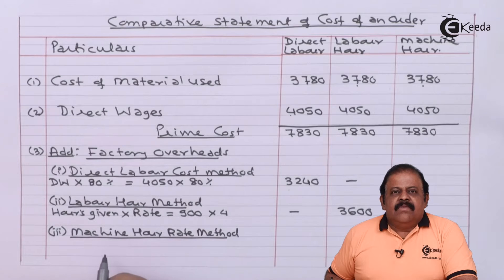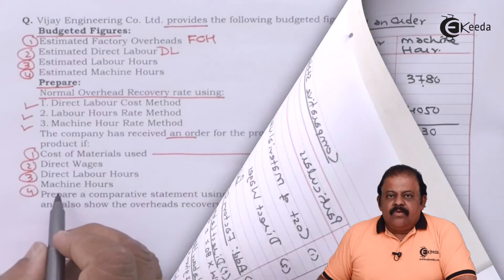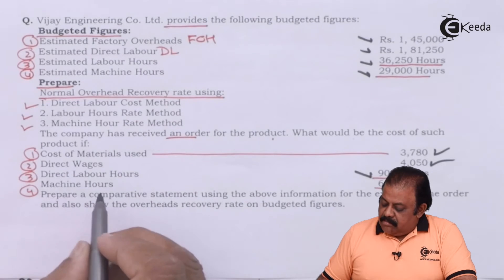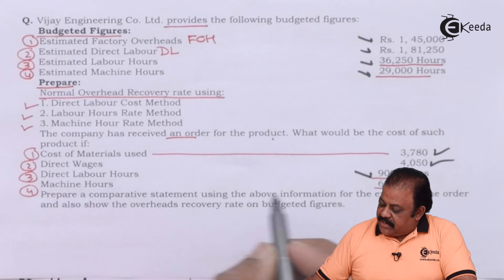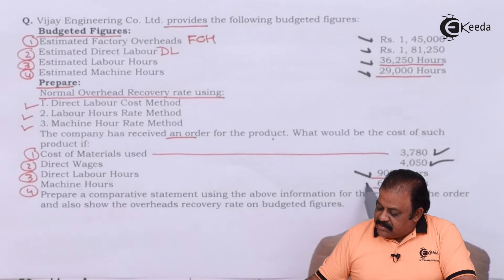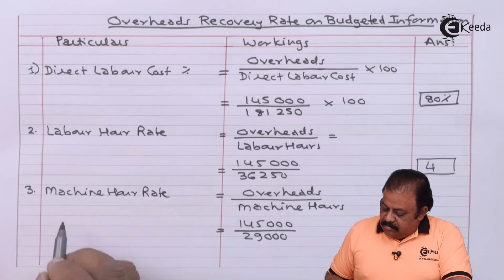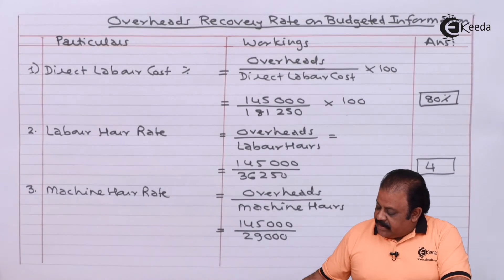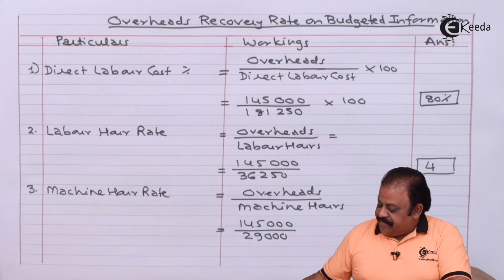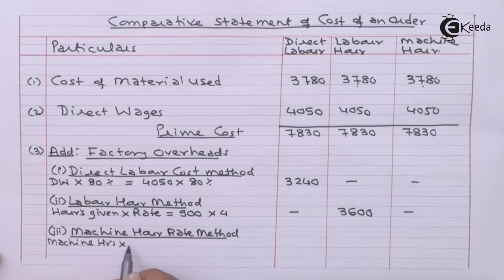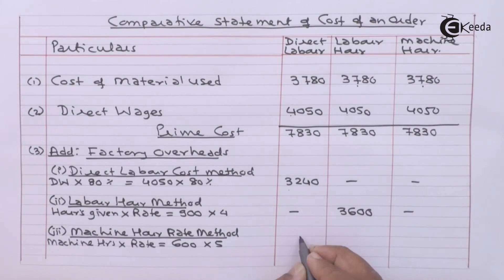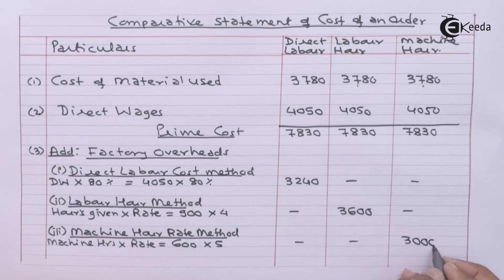Next is the machine hour rate method. For this particular order, machine hours are 600 hours. We have calculated the machine hour rate as rupees 5. So factory overheads are rupees 3,000.